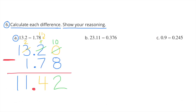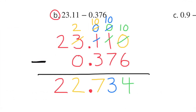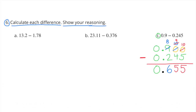Number six: Calculate each difference. A: Thirteen and two-tenths minus one and seventy-eight-hundredths equals eleven and forty-two-hundredths. B: Twenty-three and eleven-hundredths minus three hundred seventy-six-thousandths equals twenty-two and seven hundred thirty-four-thousandths. C: Nine-tenths minus two hundred forty-five-thousandths equals six hundred fifty-five-thousandths.